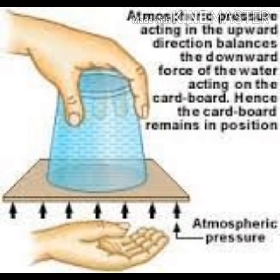The next example: take one glass and fill it with water. Afterwards, put one cardboard on the glass. After applying some pressure, the atmospheric pressure acts in the upward direction. You can see in the picture that the atmospheric pressure acting in the upper direction balances the downward force of the water, which is why the cardboard stays in place.